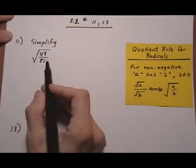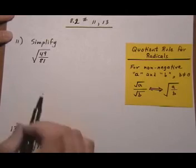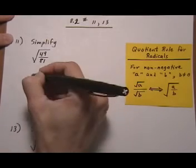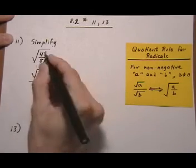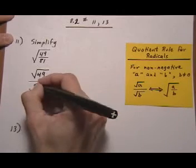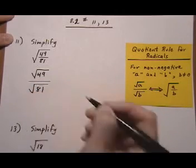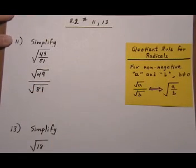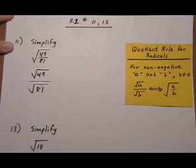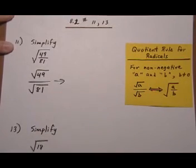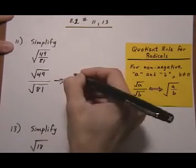Let's take a look at number 11: simplify √(49/81). We break it up because we don't want to do 49 divided by 81—that's just going to give us some decimal, and it's not going to be nice to try to get the perfect root of that. So we do √49 over √81, and that works out easily too: 7/9.